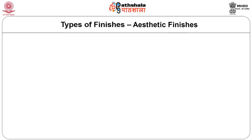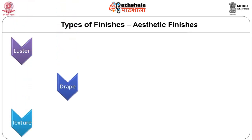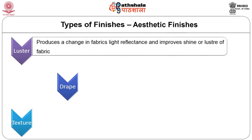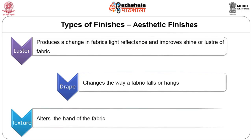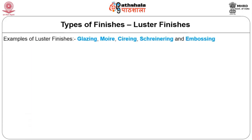Aesthetic finishes are categorized into lustre, drape or texture finishes. Lustre finish produces a change in the fabric's light reflectance and improves shine or lustre. Drape finishes change the way a fabric falls or hangs. Texture finish alters the hand of the fabric. Examples of lustre finish are glazing, moiré, schreining, schreinering and embossing.